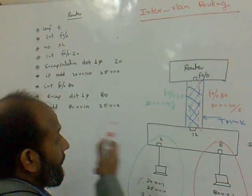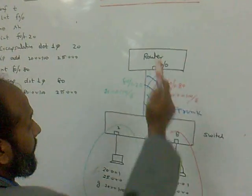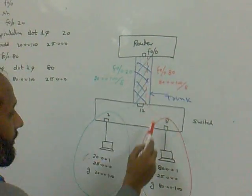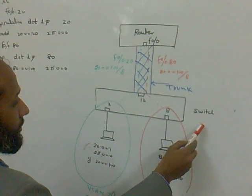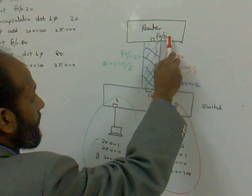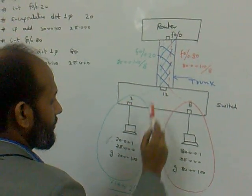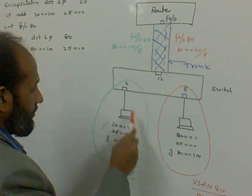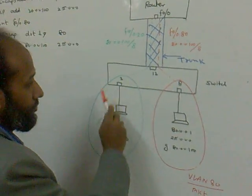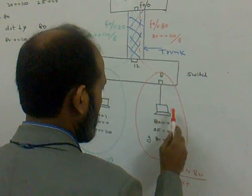We are considering the scenario of inter-VLAN routing. I am taking a router here, which is connected to the switch. Port F0/0 of the router is connected to port number 12 of the switch. One PC is connected from port number 2 of the switch and another PC is connected from port number 8 of the switch.